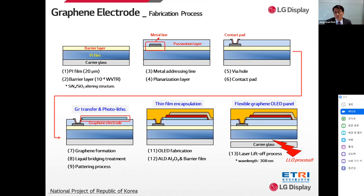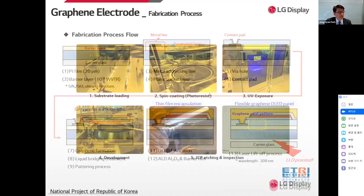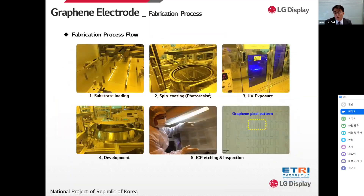These processes for graphene electrode can be applied to the current OLED manufacturing process. This slide shows the fabrication scheme to make graphene pixel patterns. The process sequence is: substrate loading, spin coating of photoresist, UV exposure, photoresist development, reactive ion etching, and pixel pattern inspection. These processes for graphene electrode can also be applied to the current OLED manufacturing process.